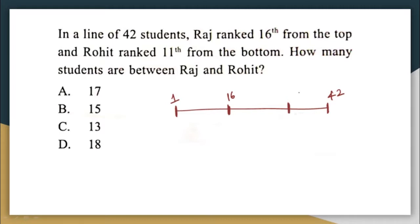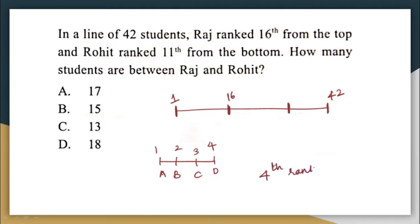Before I write the number, let us understand what they are trying to say. Let us say there are 4 people in a class: A, B, C, D. A is 1st rank, B is 2nd rank, C is 3rd rank, and D is 4th rank. When I say that D is the 4th rank, how many people are there before D? There are 3 people before D. Similarly, when I say that Raj is 16th rank, there are 15 people before Raj.